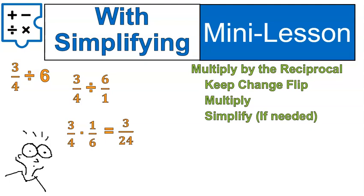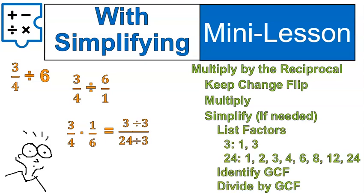Now when you're simplifying, you are going to list the factors of both numbers. So we're going to list the factors of 3 and the factors of 24, and try to find our greatest common factor. In this case, the greatest common factor, as you see in the list there, is 3. So what we do to the fraction is we divide the top and bottom by 3 to get our final answer of 1 over 8.